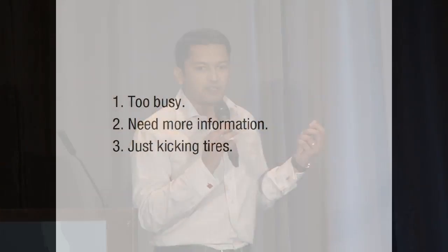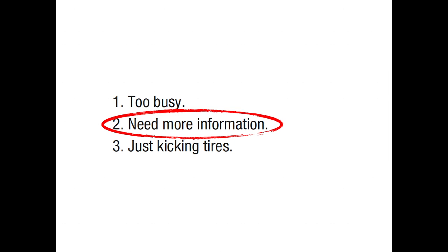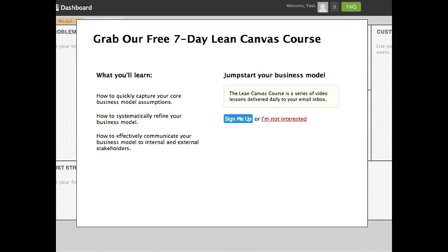Through these responses we were able to identify the top three reasons why people weren't activating. None of these were usability issues, which is where all of our initial efforts had been directed. We decided to tackle the second item on this list — the lower-hanging fruit — by building a seven-day Lean Canvas course, which we set up as a split test.